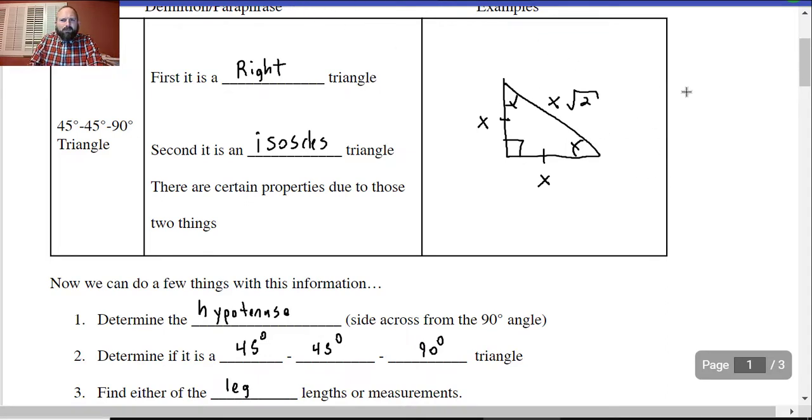Now, we could probably prove this by going like x squared plus x squared is equal to, let's call it hypotenuse squared. Well, if we add these together, we get 2x squared is equal to h squared. If we do the square root to cancel it, the two stays inside, x is on the outside, and there's how we got our hypotenuse side.